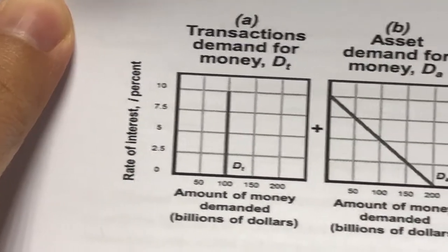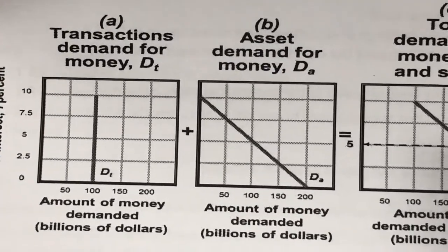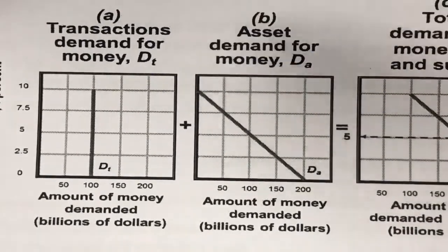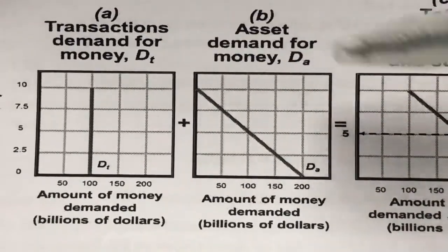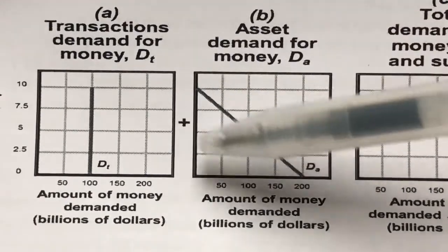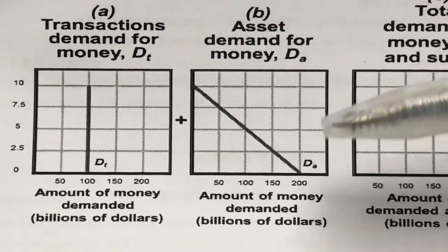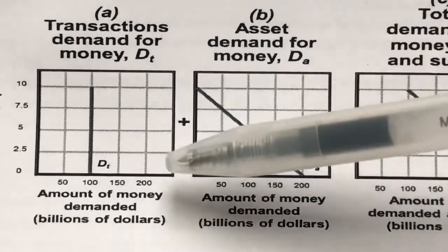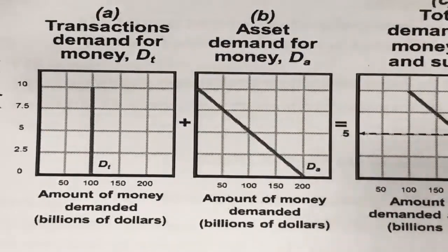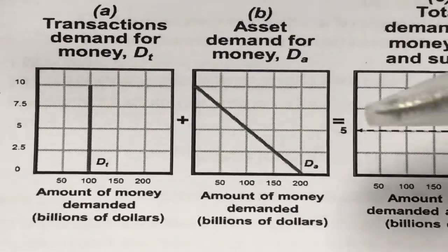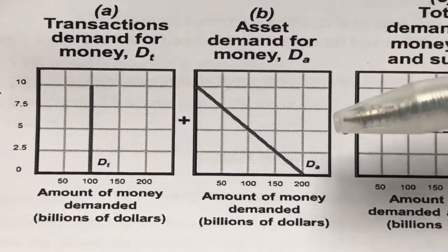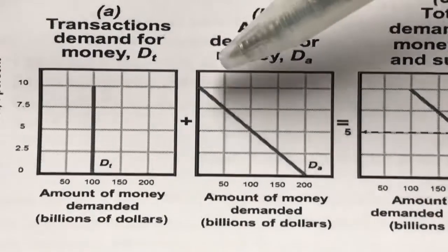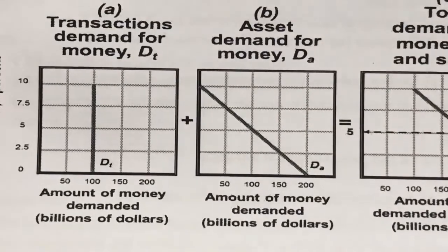In contrast, the asset demand for money has a negative or inverse relationship with the interest rate. This is because as the interest rate gets lower, it is much cheaper for people to demand for money. Whereas if the interest rate gets higher, the price of money is more expensive, and people will demand less of it. Therefore, the shape of the asset demand for money is downward sloping.